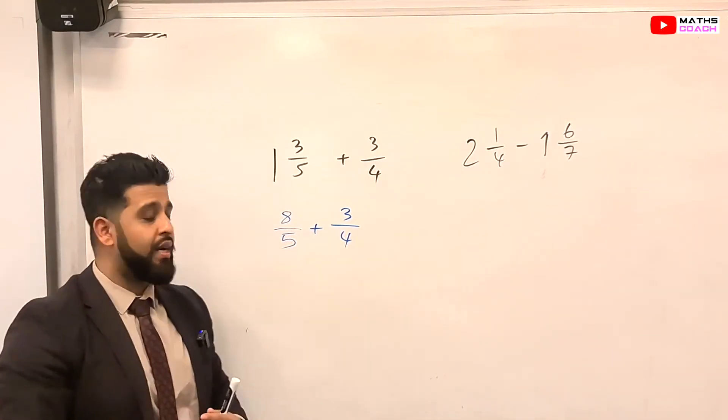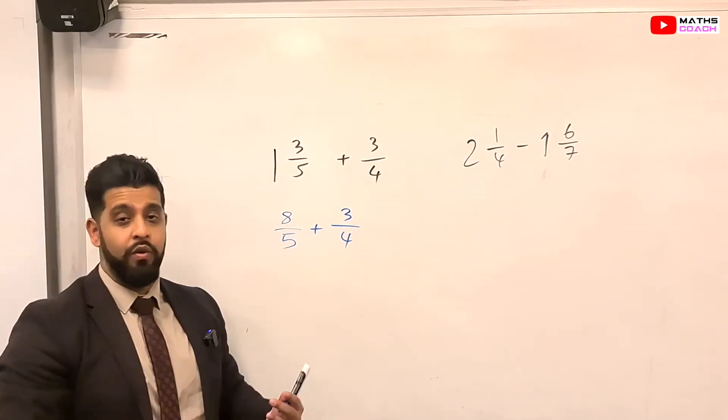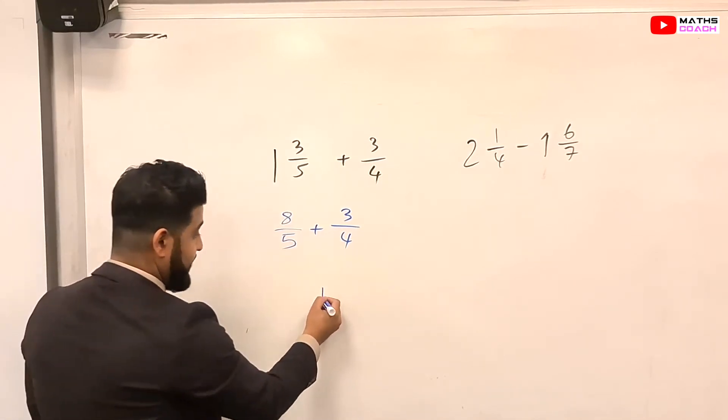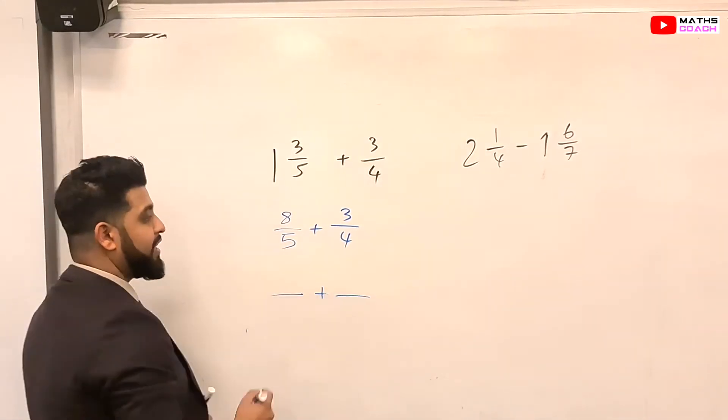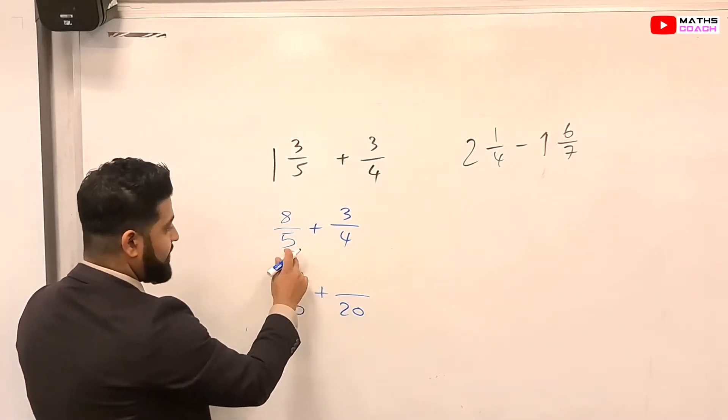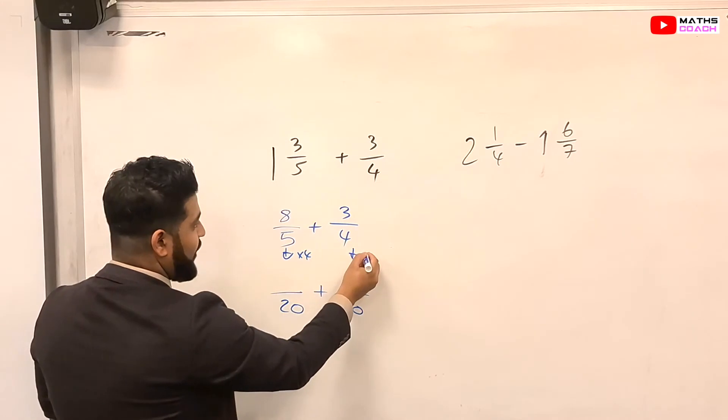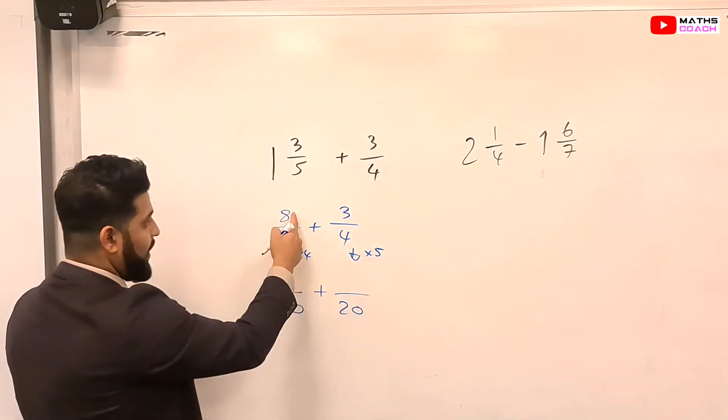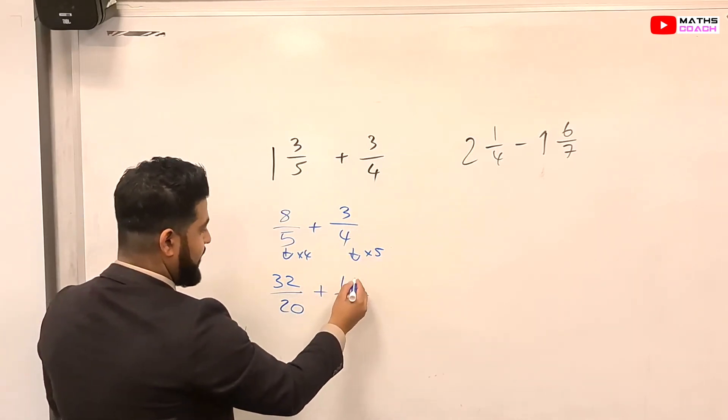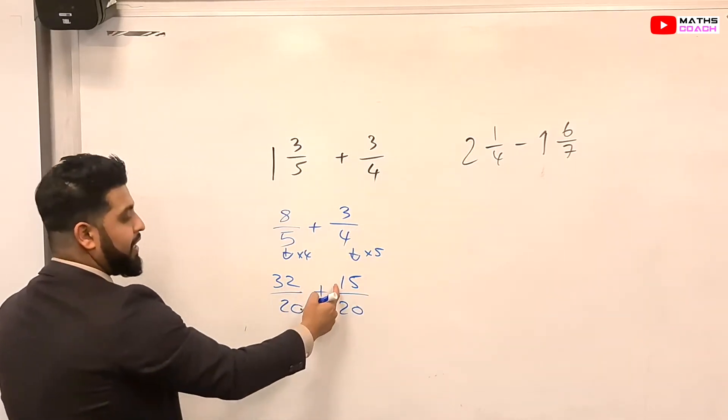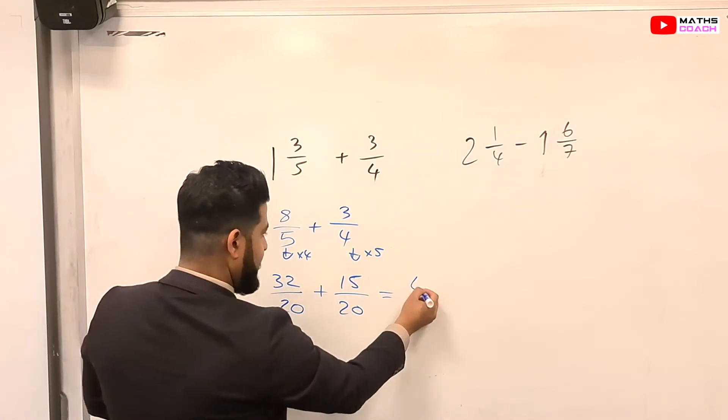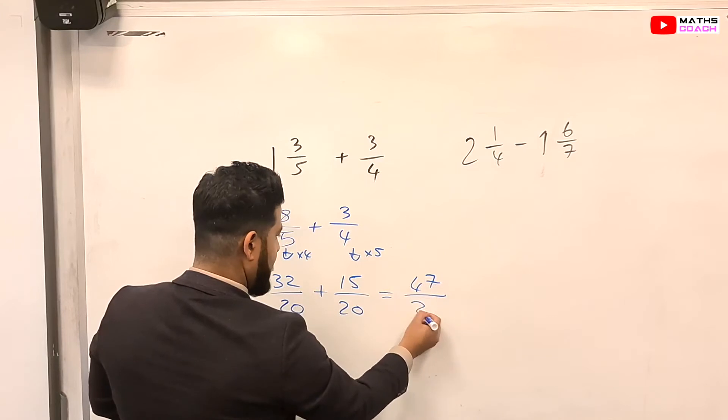And then we just do what we've been doing all lessons so far, which is to have the lowest common multiple. So the denominators could be the same. So what is the lowest common multiple between 5 and 4? We know it is 20, okay? So therefore, we times this fraction by 4 and this fraction by 5. So 8 times by 4 equals 32. 3 times by 5 equals 15. So 32 plus 15 now. And that gives me 47 over 20.